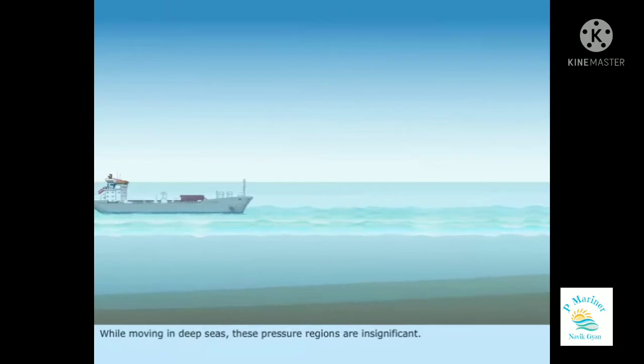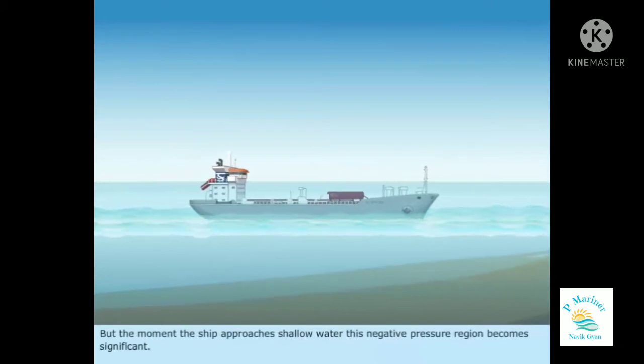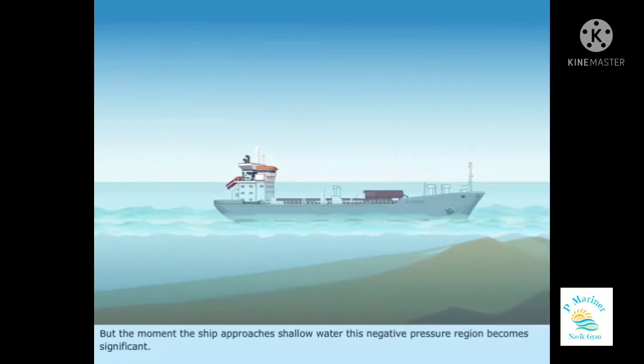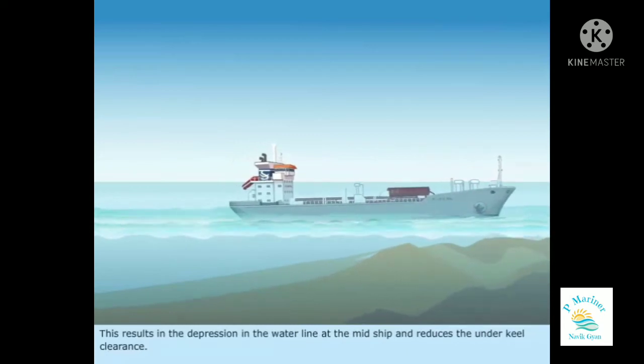While moving in deep seas, these pressure regions are insignificant, but the moment the ship approaches shallow water, this negative pressure region becomes significant. This results in the depression in the water line at the midship and reduces the underkeel clearance.